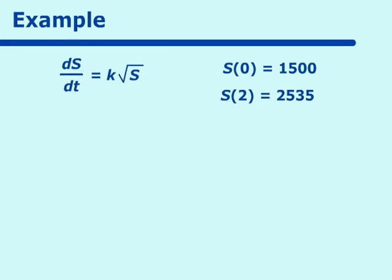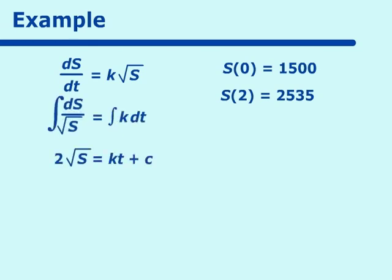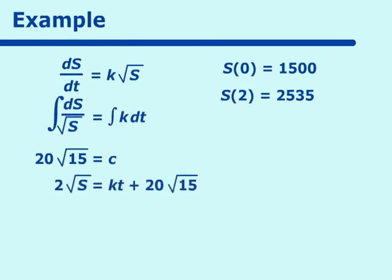Separating variables, dS over the square root of S equals k dt. Integrating both sides gives 2 times the square root of S equals kt plus C. Substituting T equals 0 and S equals 1,500, we find C equals 2 times the square root of 1,500. Simplifying — taking 100 out — we get C equals 20 times the square root of 15. So the equation becomes 2 times the square root of S equals kt plus 20 square roots of 15.